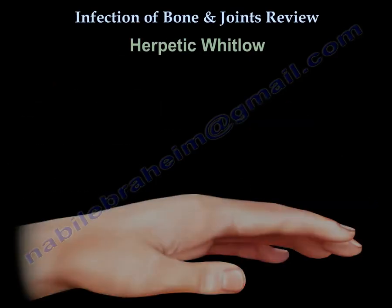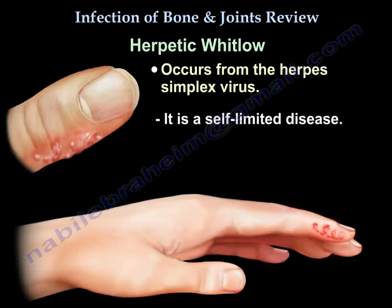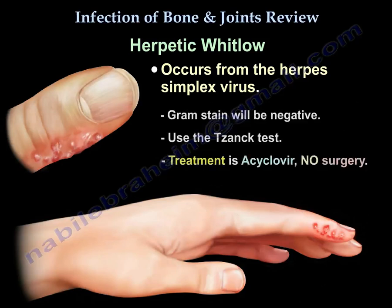Herpetic whitlow is a self-limited disease caused by herpes simplex virus, seen in dentists, respiratory therapists, and anesthesiologists. It can also affect toddlers. There are vesicles on the finger with inflammation and redness at the base of the vesicle. The gram stain will be negative. Use the Tzanck test, and the treatment is acyclovir. No surgery.